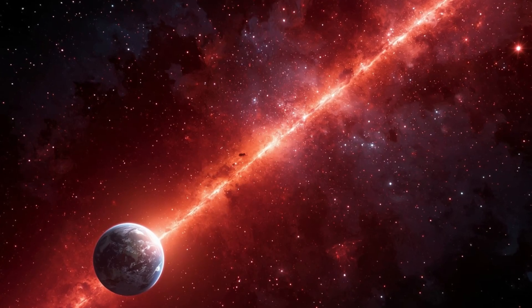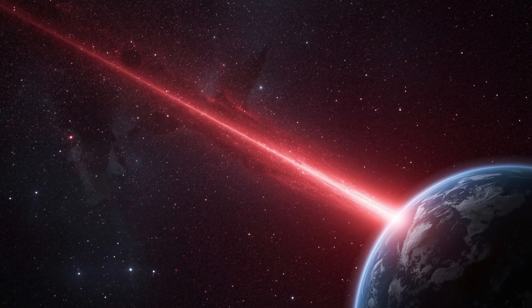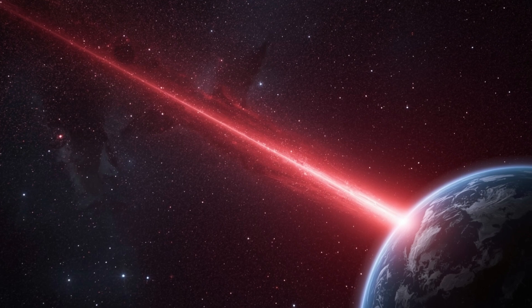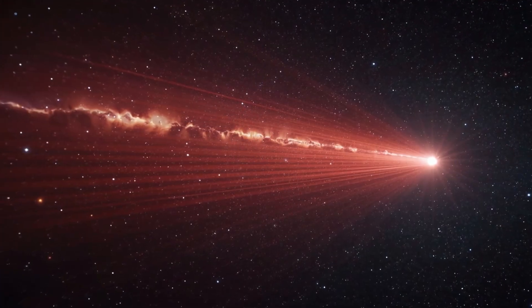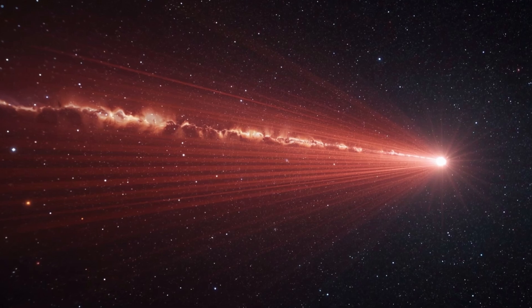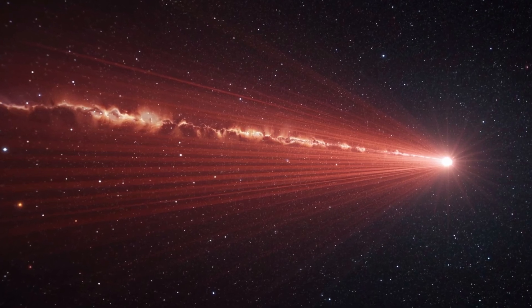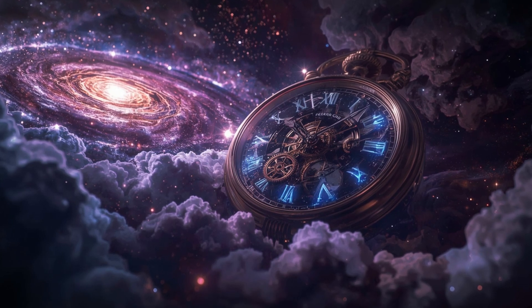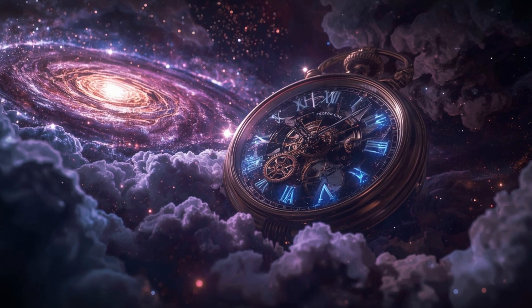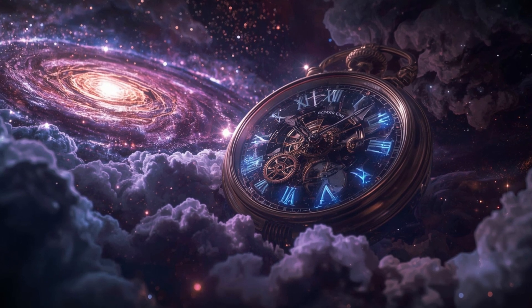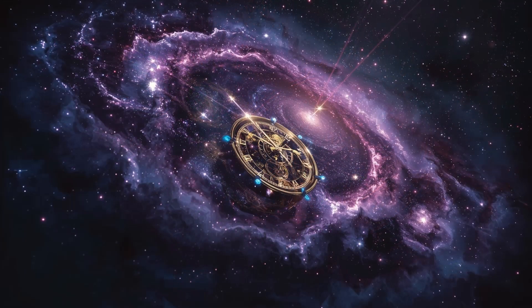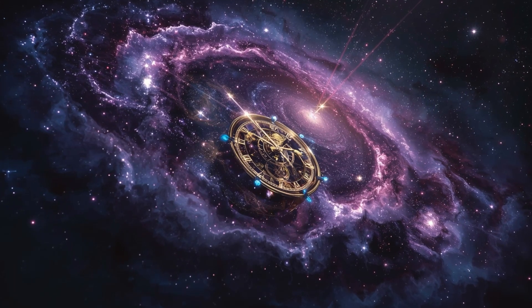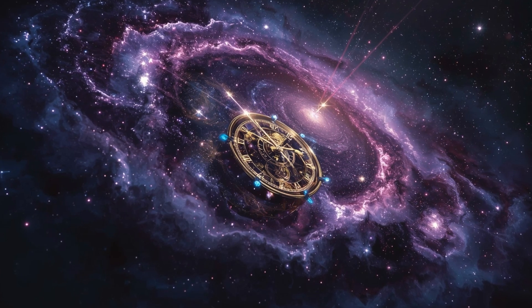And yet, the implications go even deeper. If these galaxies exist where they shouldn't, then scientists also have to question whether we truly understand how time and processes like star formation operate at a cosmic scale. Are galaxies forming faster than we ever imagined? Or is there another explanation behind what we're seeing? Some experts are even wondering if our interpretation of the data, how we measure distances and redshifts, could contain flaws. But if the data is accurate, the mystery only deepens.